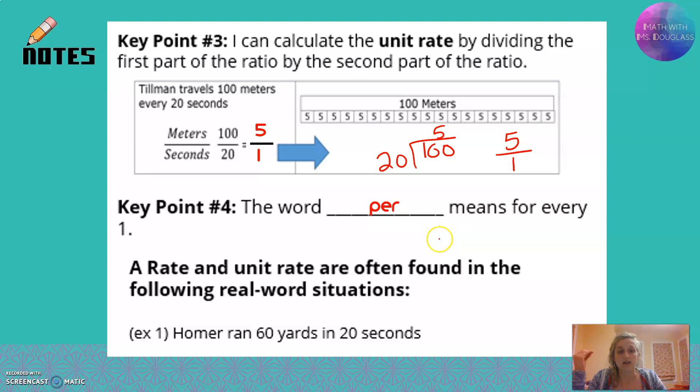A rate and a unit rate are often found in real-world situations. Like, Homer is running. We want to talk about yards per second. Right now, we're not at 1 second, but we can simplify it and find out. 60 yards for every 20 seconds. If you want to add your units to make sure that you're staying on top of them, that's fine. I want to make this a unit rate.